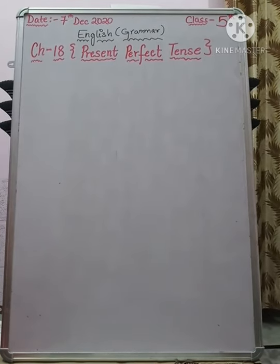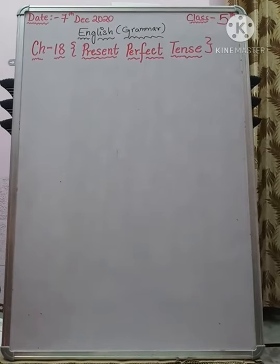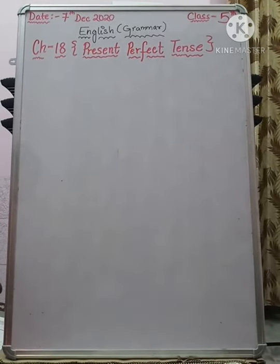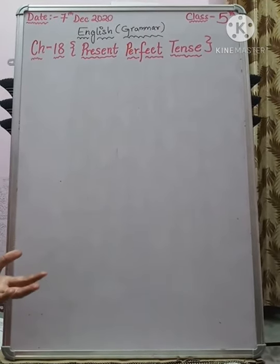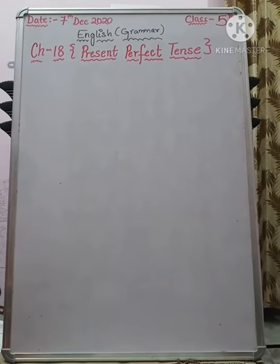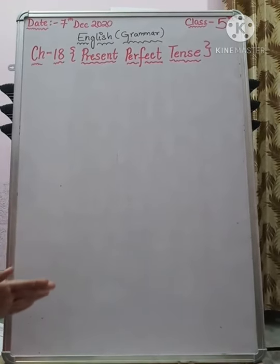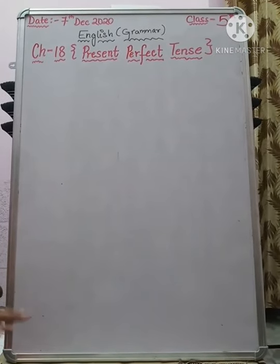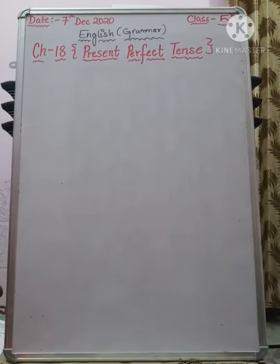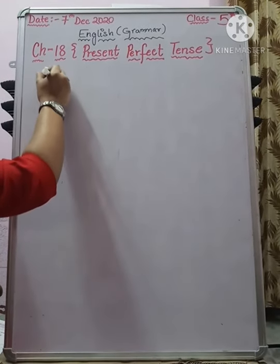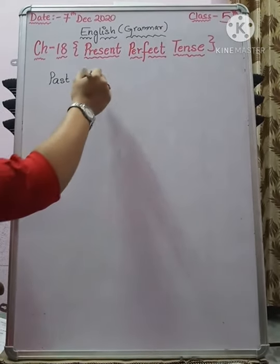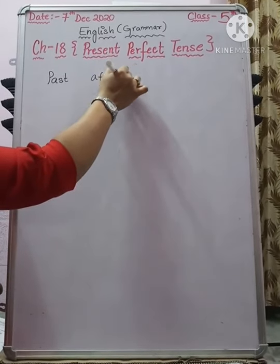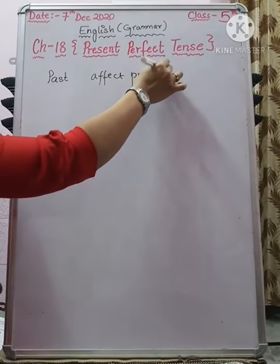Simple present tense covers activities we do on a regular basis during a day. Present continuous tense covers ongoing activities — 'I am eating', 'I am running'. Now comes present perfect tense. It is used for those activities that happened in the past, but whose effect connects to the present. It joins the past and the present together.